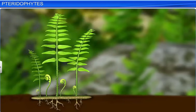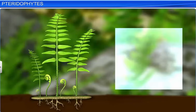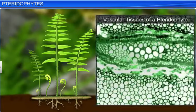These pteridophytes occupy an important place in the plant kingdom, as they were the first plants to have true roots, stems and leaves, as well as vascular tissues.